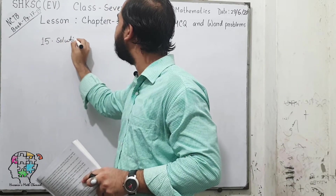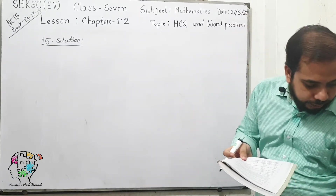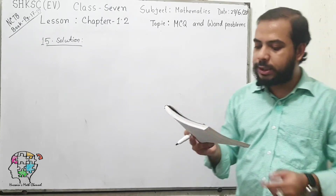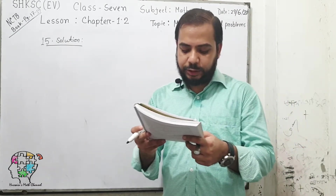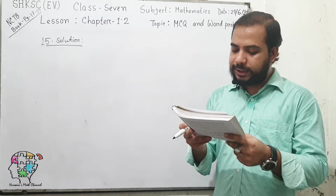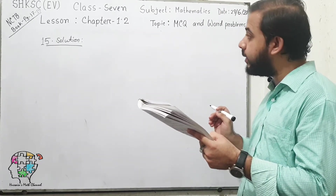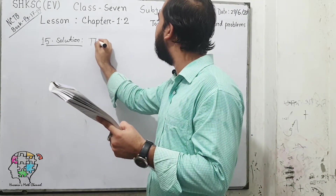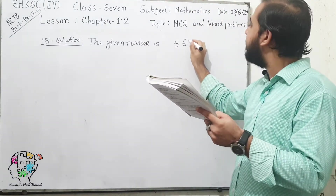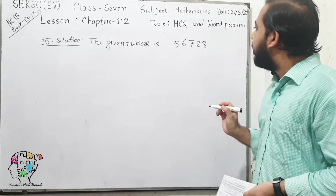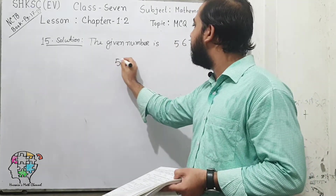Solution number 15. The question reads: at least how many soldiers are to be removed or added with 56,728 soldiers so that the soldiers can be arranged in the form of a square? The given number is 56,728. So at first, we need to find the square root of this number.